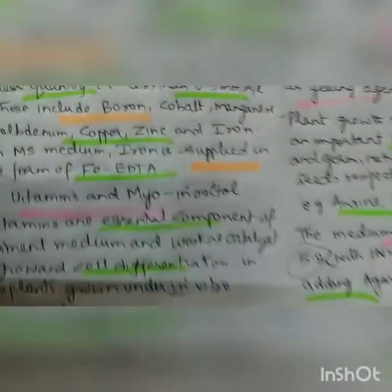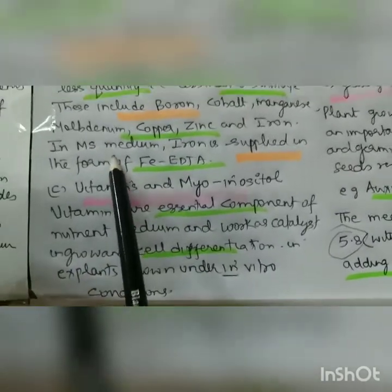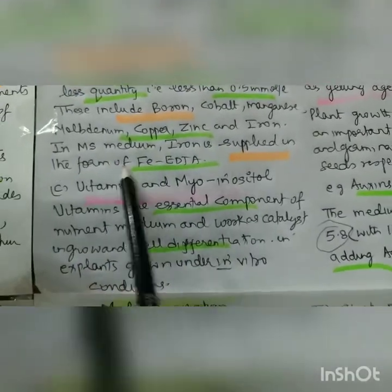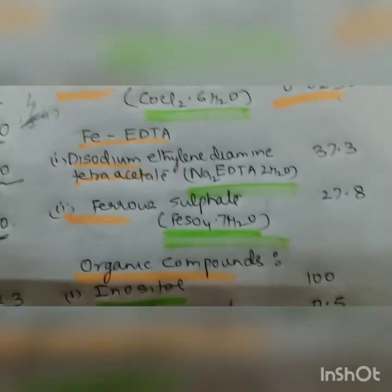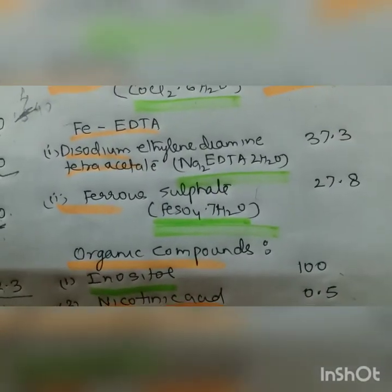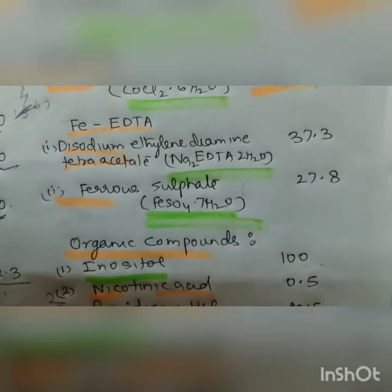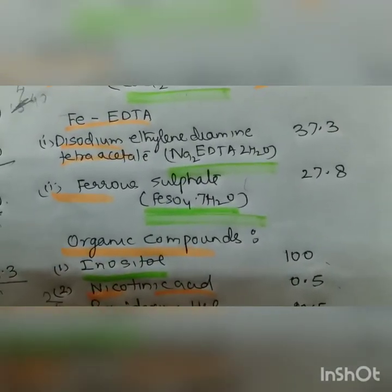In MS medium, iron is supplied in the form of iron-EDTA. Iron-EDTA is disodium ethylene diamine tetra-acetate — sodium EDTA.